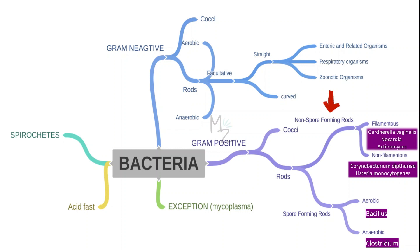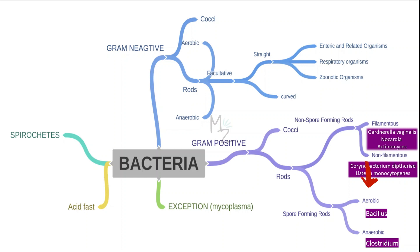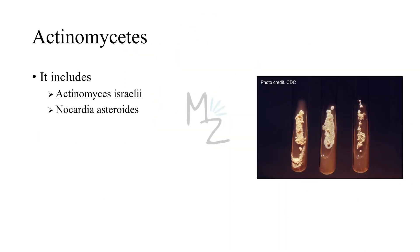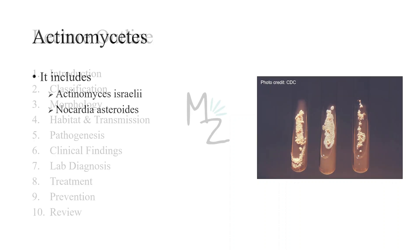Gram positive bacteria are further subdivided into cocci and rods. Rods are further classified into non-spore forming, which are further divided into filamentous — including Gardnerella, Nocardia, and Actinomyces — and non-filamentous, which includes Corynebacterium diphtheriae and Listeria monocytogenes. Spore-forming rods include aerobic forms like Bacillus and anaerobic forms like Clostridium. Actinomyces israelii and Nocardia asteroides are members of the family Actinomycetes.